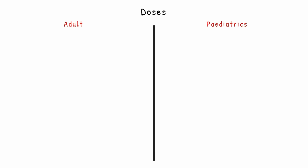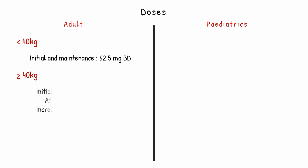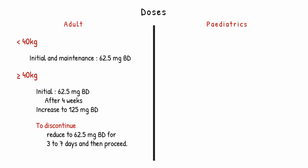Coming to doses — they vary for adults and pediatrics. For adults, if the patient weight is less than 40 kg, initiate the dose at 62.5 mg twice a day and maintain the same dose. If patient weight is greater than or equal to 40 kg, initiate at 62.5 mg twice a day and after 4 weeks increase to 125 mg twice a day. If treatment needs to be discontinued, decrease the dose to 62.5 mg twice a day for 3 to 7 days.